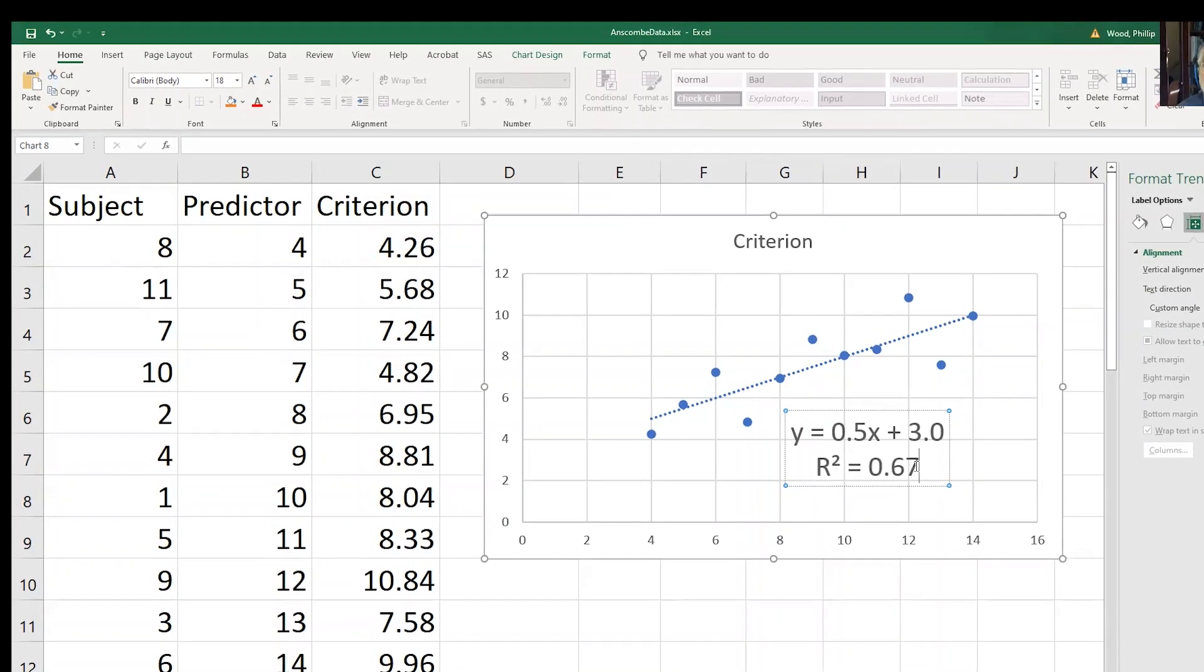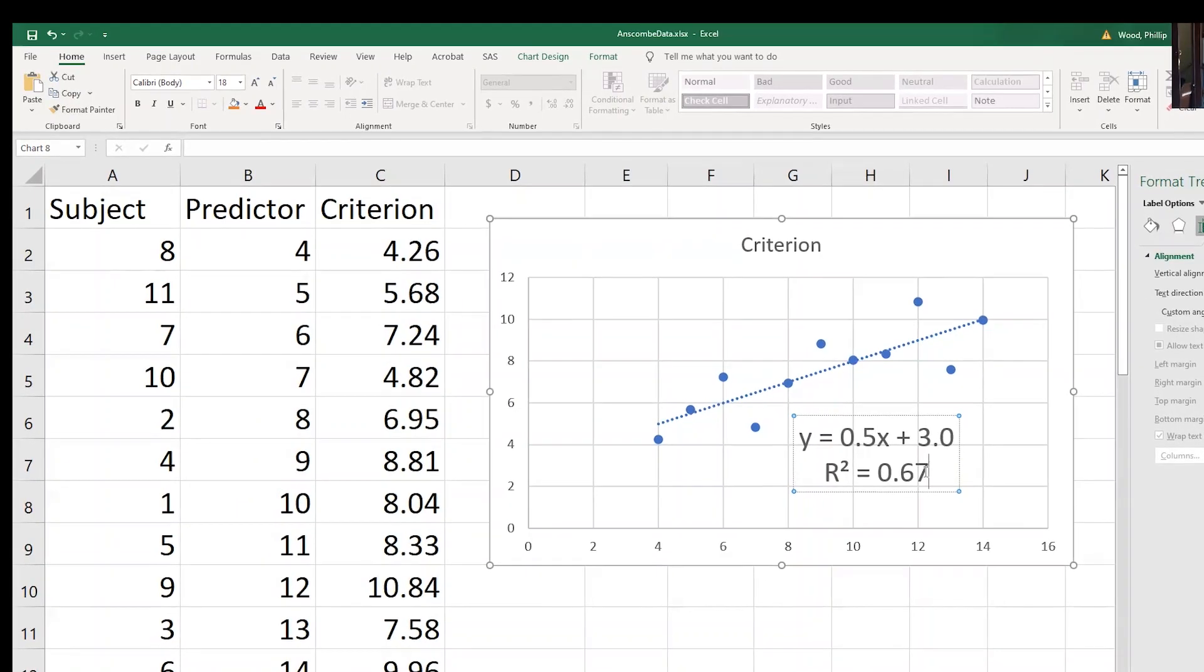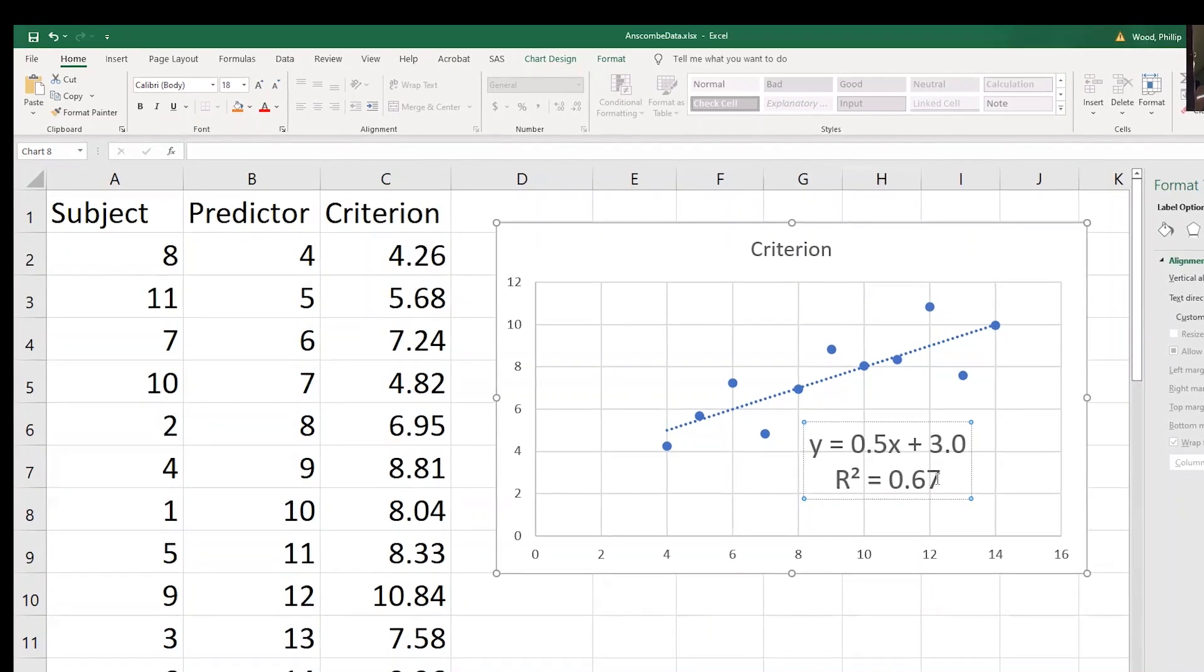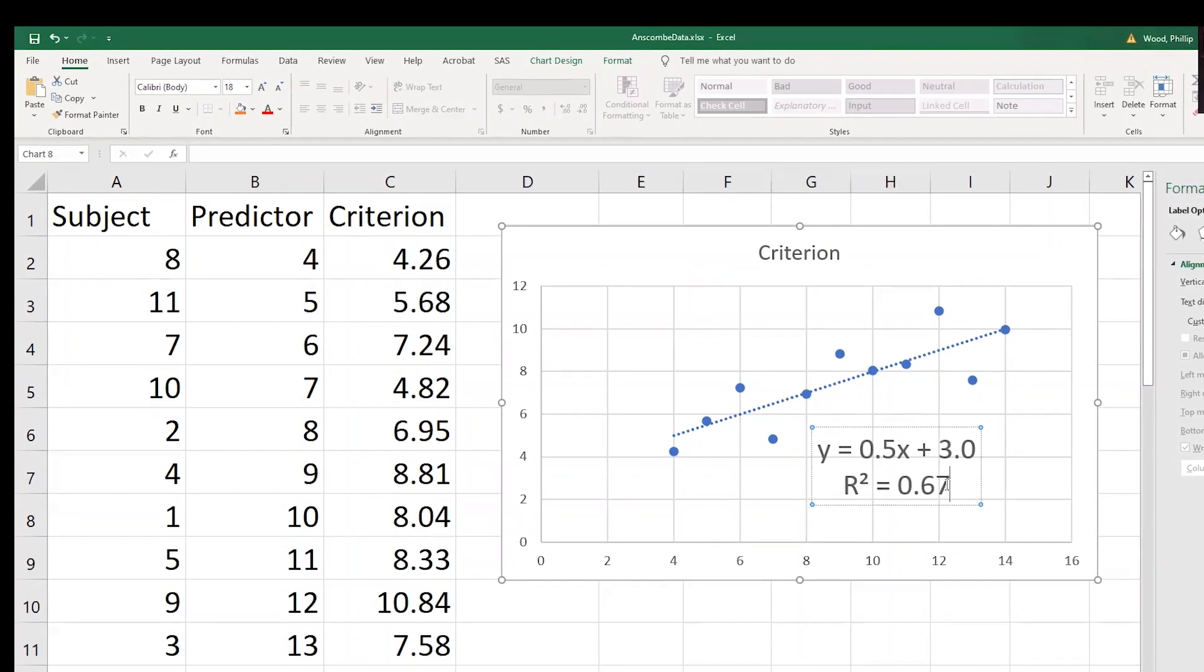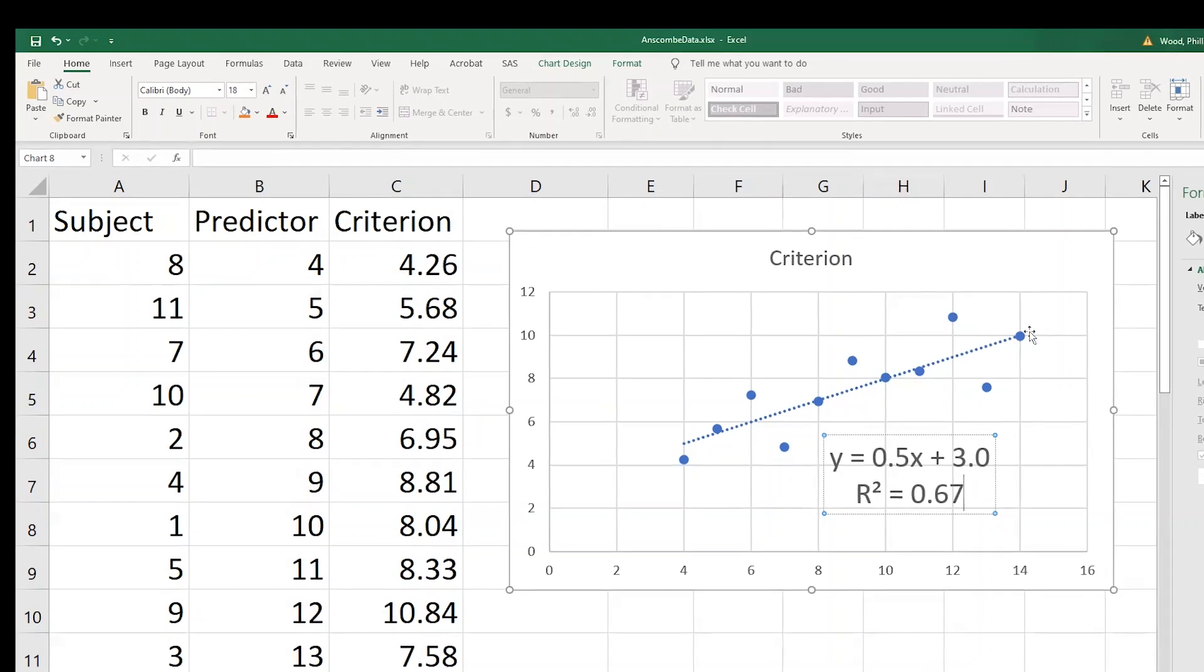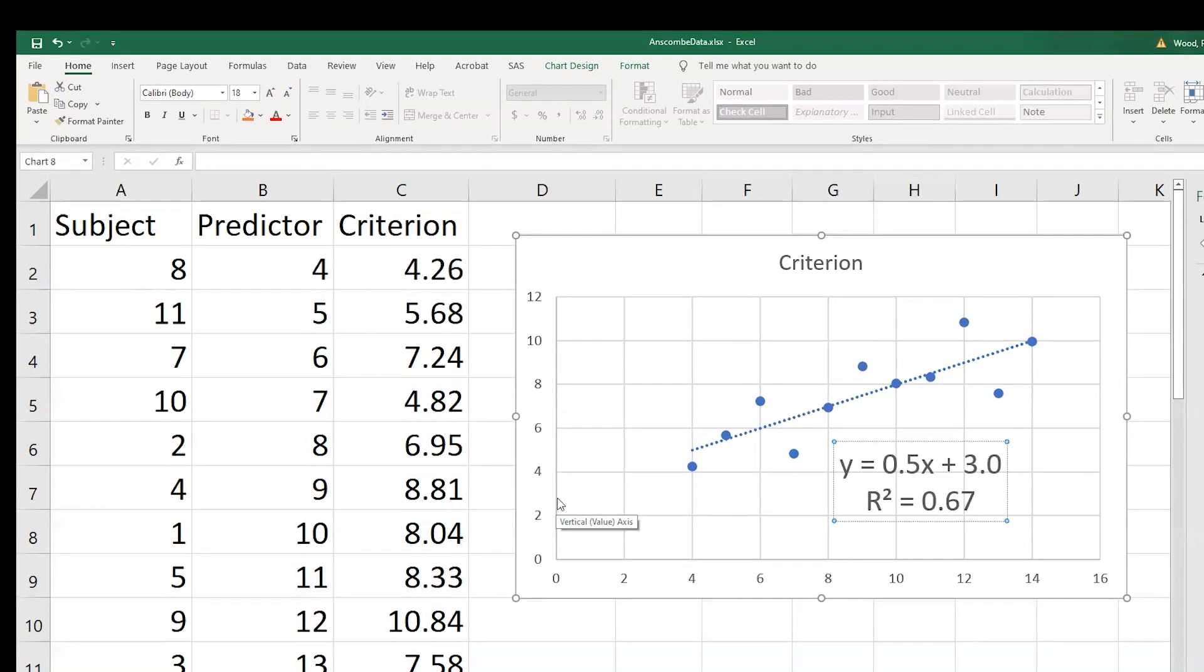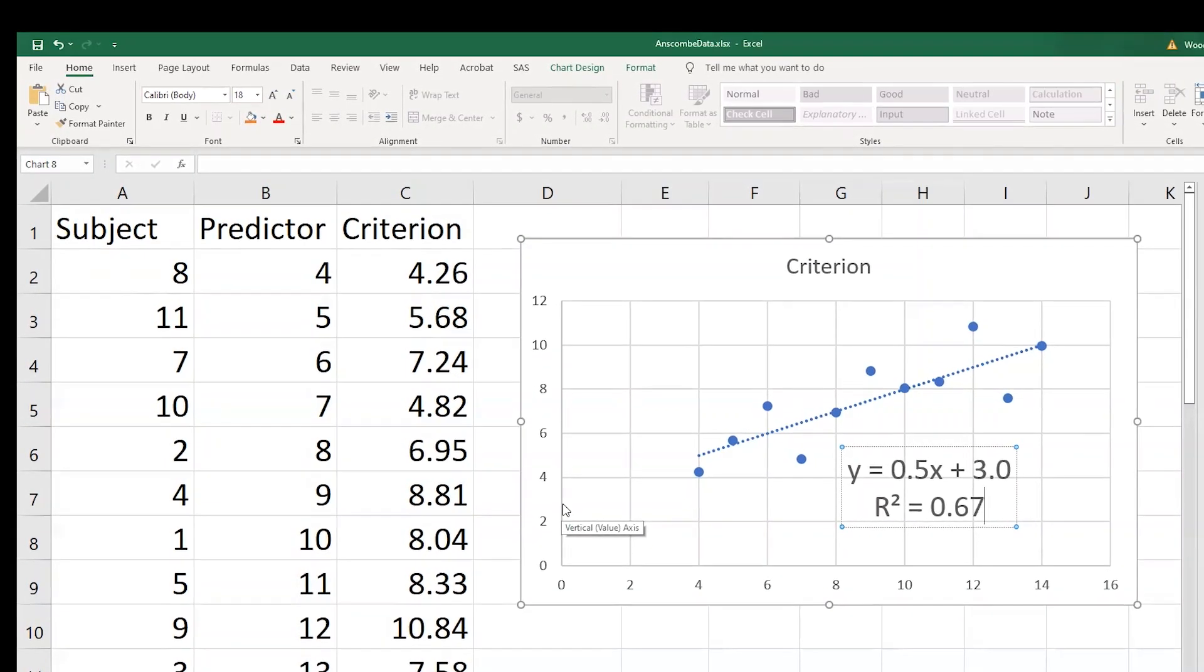And what we see here is a formula for the predicted value of the criterion based on the predictor. That is, if I take the predictor value, multiply it by 0.5, and add 3, that's going to give me a predicted value. The number 3 is the intercept. That is, if I would extend this regression line all the way down to where x has a 0, I would be hitting it at that coordinate, that y-axis, at the number 3.